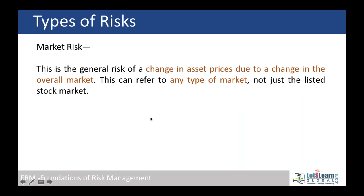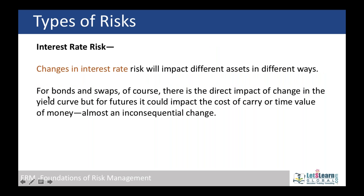Market risk, or systematic risk, is applicable to all companies, not company-specific. For example, input price changes due to a strengthening foreign currency affect the overall market, not just one company. Interest rate risk occurs when you lend or borrow heavily — for example, a company borrows $10 million at 6% interest to be repaid in 5 years.